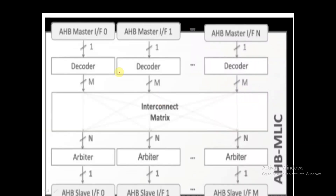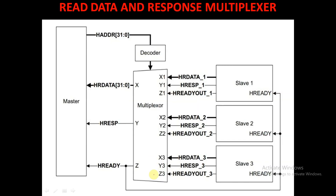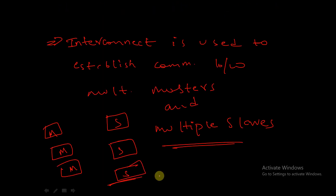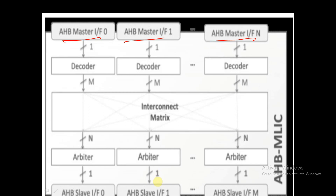An interconnect is used when we want to communicate multiple masters with multiple slaves. Here, we are using an interconnect for this communication, and with the help of the interconnect, we establish a connection between multiple masters and multiple slaves.